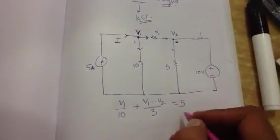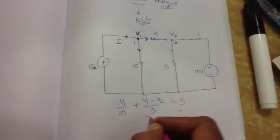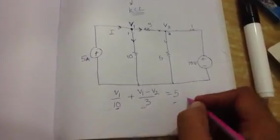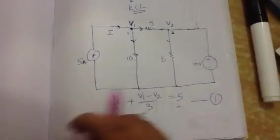So this is the current, and this is the sum of the currents going out of the node, and this is the incoming current. Let's take this as equation 1.